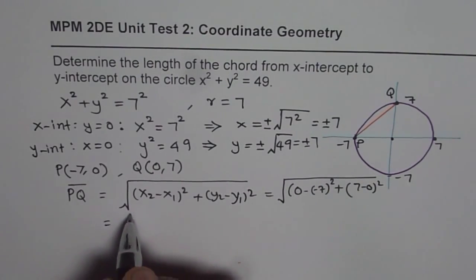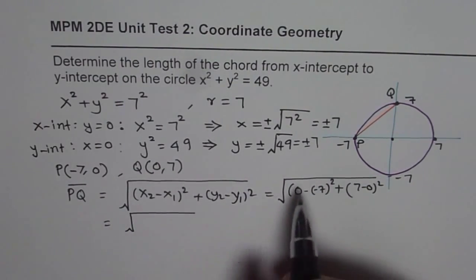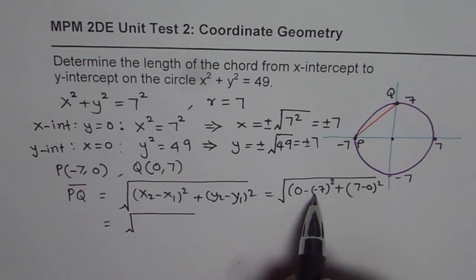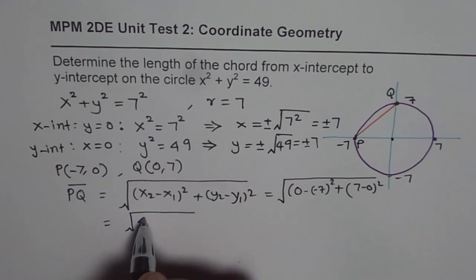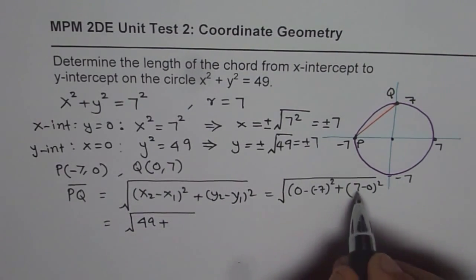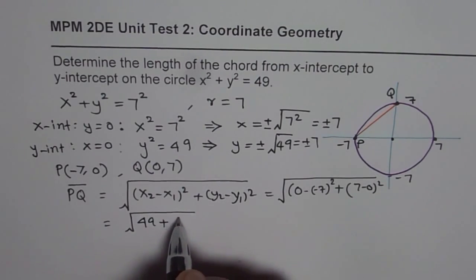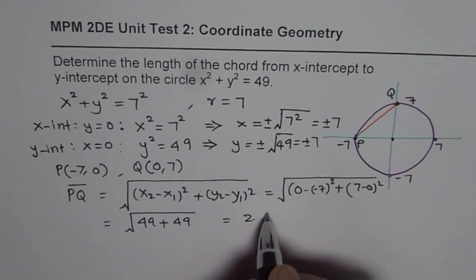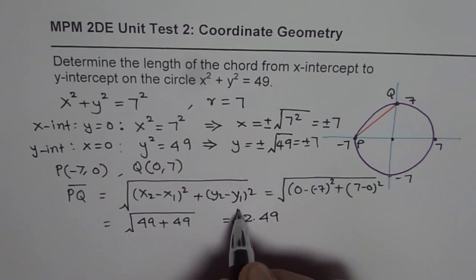That gives us equal to 0 minus 7 square is, -7 plus 7, 7² will be 49. So we get 49 here plus 7² is again 49. So we get 49. We get 2 times 49 square root.